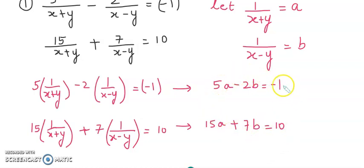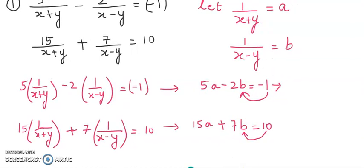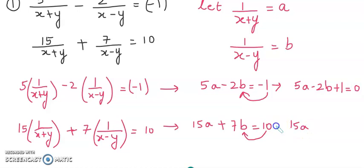Now, what is the first rule for applying cross multiplication? We have to shift the constant to the left side, meaning all three terms should be on the left side. So my equations will now change as 5a minus 2b plus 1 equals to 0, and 15a plus 7b minus 10 equals to 0.